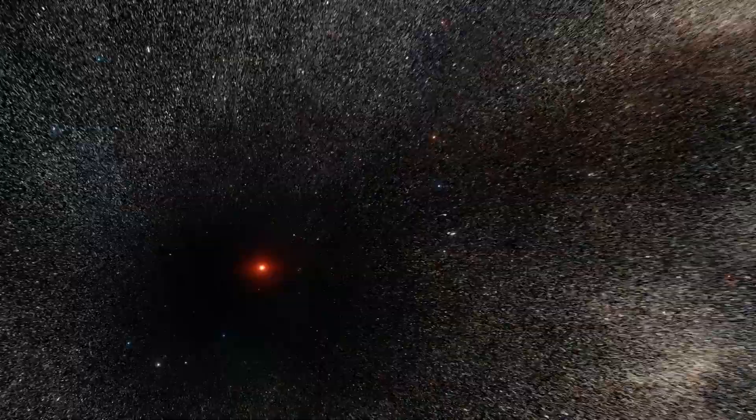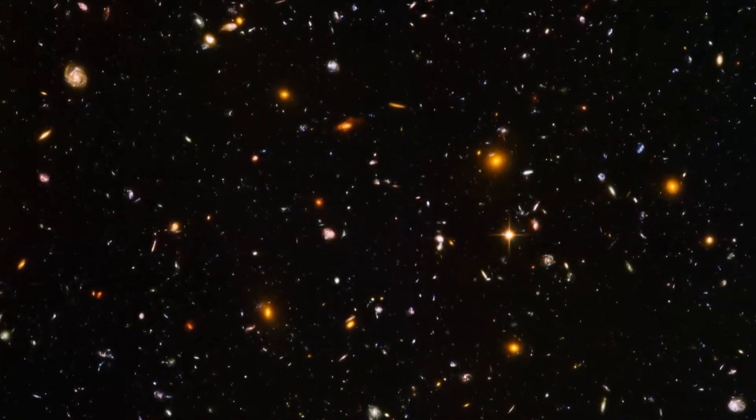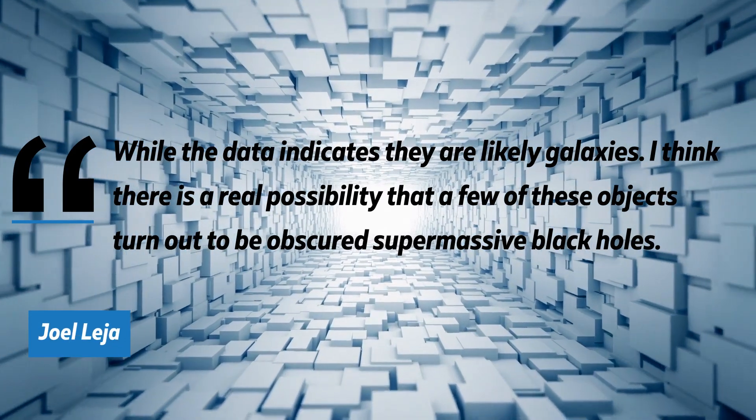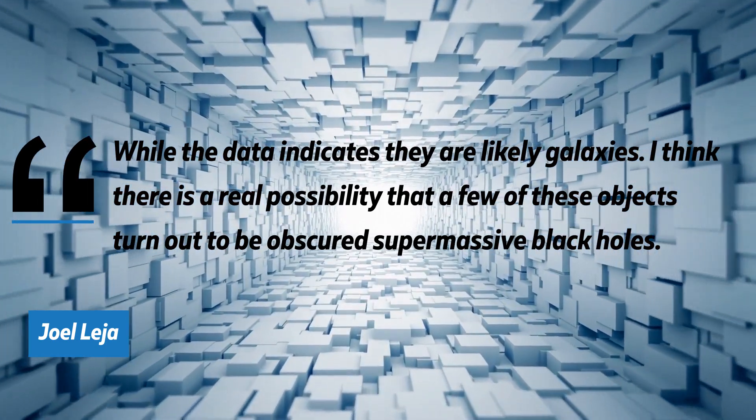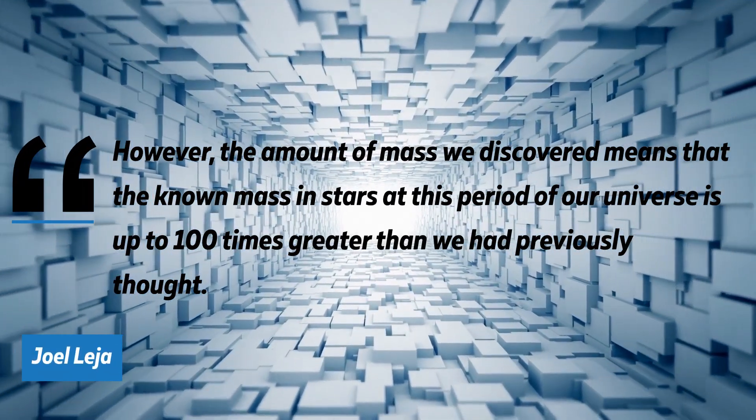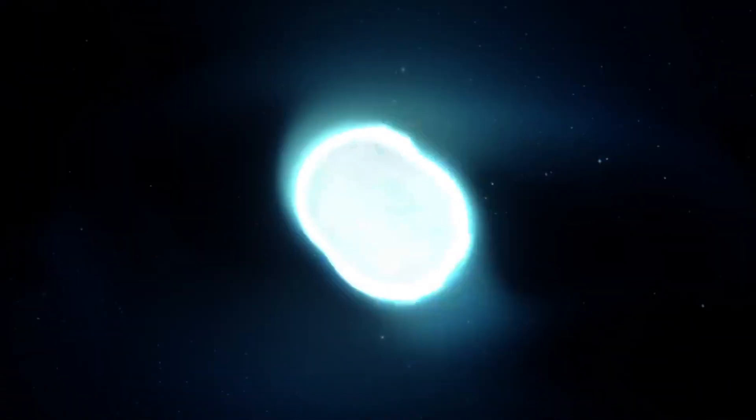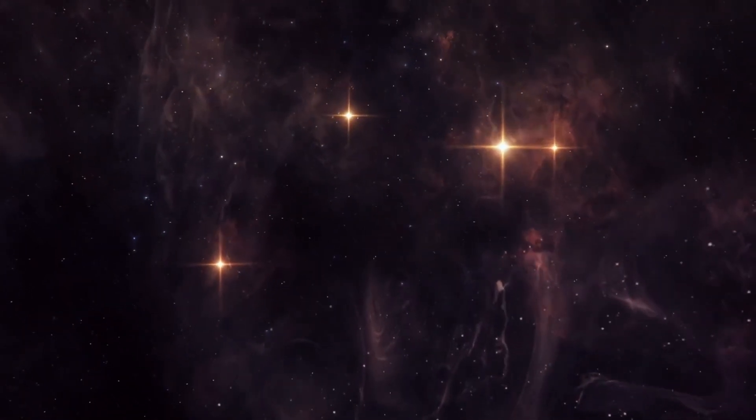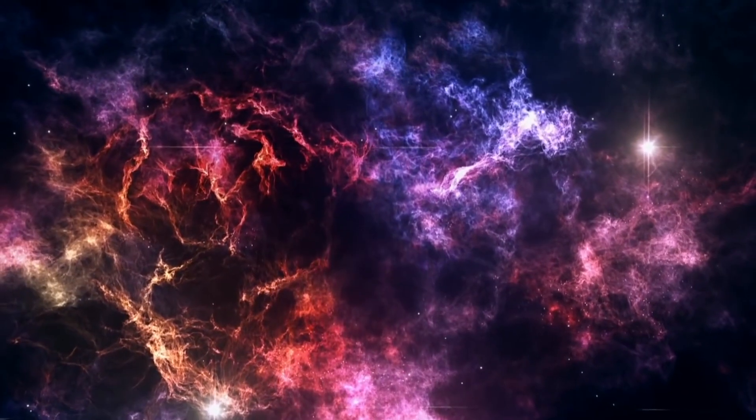While he revealed that they had no idea what they were going to find, the unexpected has since created issues in the field. The assistant professor also added that this was their first glimpse back this far in time, so researchers were keen to keep an open mind about what they were seeing before them. 'While the data indicates they are likely galaxies,' he said, 'I think there is a real possibility that a few of these objects turn out to be obscured supermassive black holes. However, the amount of mass we discovered means that the known mass in stars at this period of our universe is up to 100 times greater than we had previously thought.' But maybe it wasn't through mergers or accretion. Maybe they just formed stars naturally. After all, that does happen.